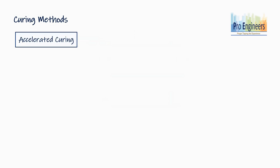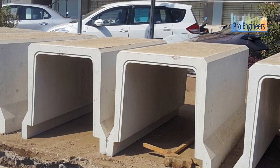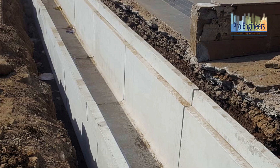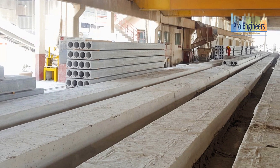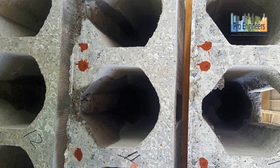There is another method called accelerated curing, which is a specialized method generally preferred in special cases such as precast concrete members. In this method, steam is utilized to cure concrete, which gains strength at an early age — say 24 hours or even less — as per the requirement of the structure. However, this method is costly and hence not preferred in all cases. This is a special method and will be covered in a separate session.